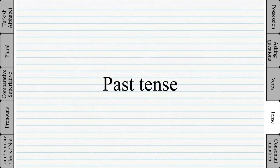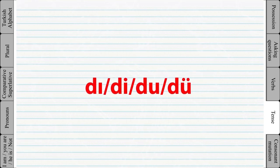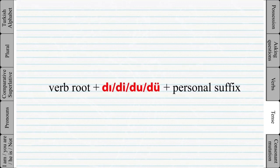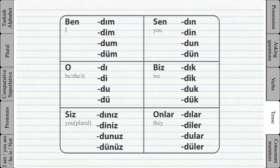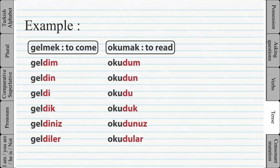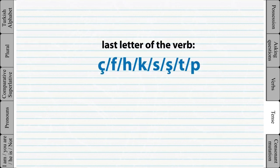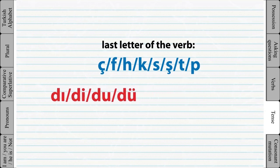Past tense: we learned how to add the present continuous suffix to the root of verbs. To make a verb into the past tense, we use one of four suffixes — which one to use again depends on the last vowel of the verb. A very important note: if the last letter of the verb root is one of certain letters, then the letter D must be changed to letter T, so instead of using those four suffixes we use the T-form equivalents.